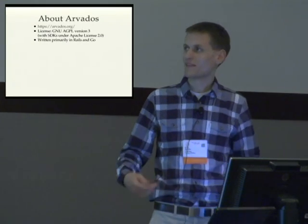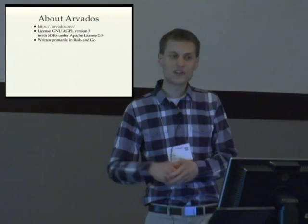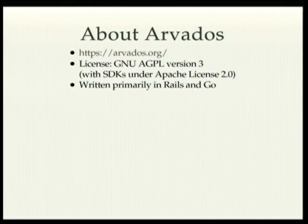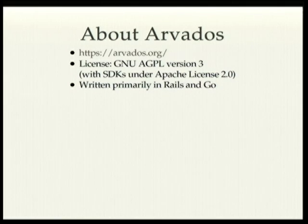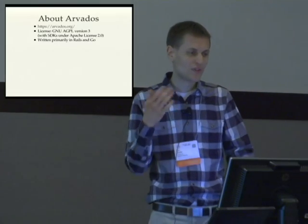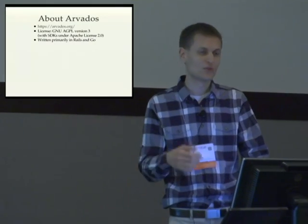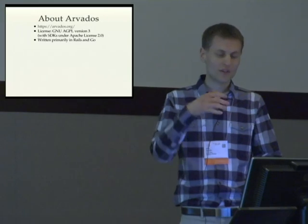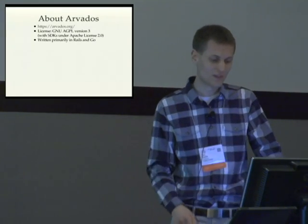Just to review some basic information about Arvados, feel free to check out our website. Arvados is licensed under the GNU Affero GPL version 3. We do have SDKs under the Apache license, so if you need to develop scripts that run on the Arvados framework, you can do that regardless of their licensing, but all of our stuff is copylefted. It's written primarily in Rails and Go — anything web-facing gets written in Rails, and most other stuff is making its way to Go.